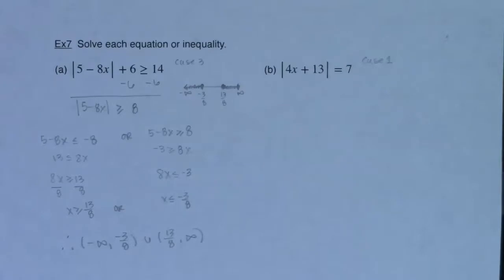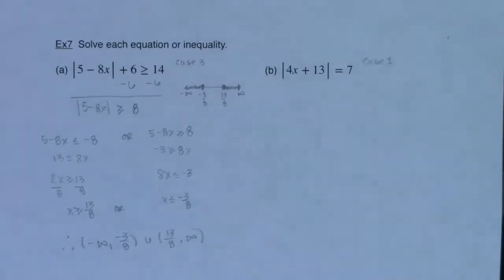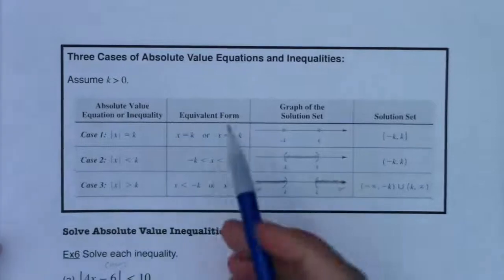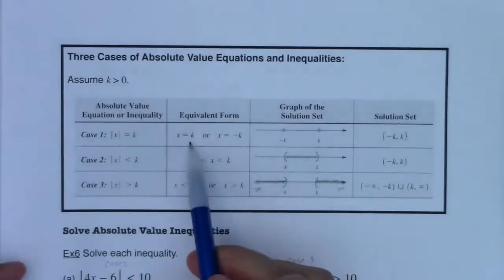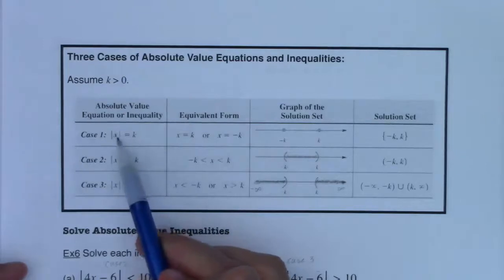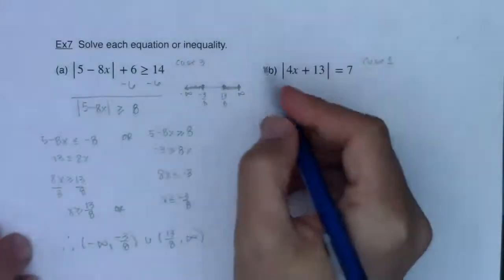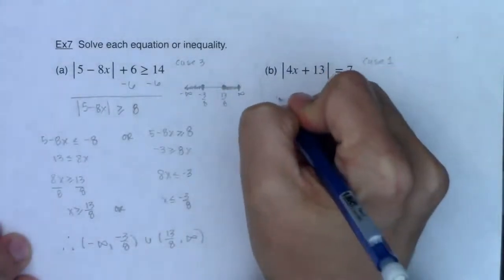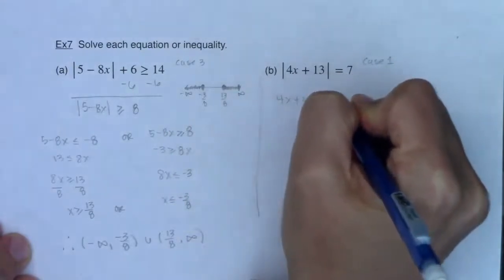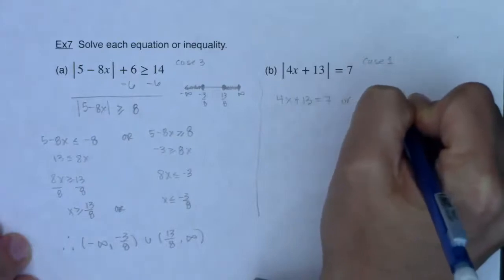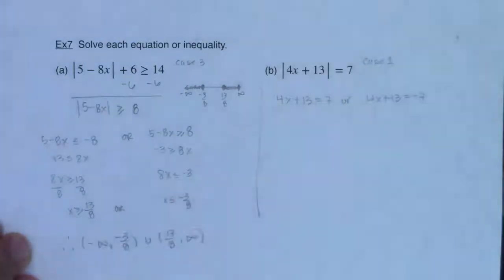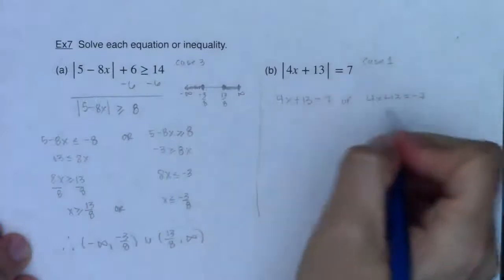Example 7b is a Case 1 — I have the absolute value expression isolated. We covered the mechanics back in Section 2.6, but I'll set up two equations: whatever's in the absolute value set equal to k or negative k. So I'll write 4x plus 13 equals 7, or 4x plus 13 equals negative 7.